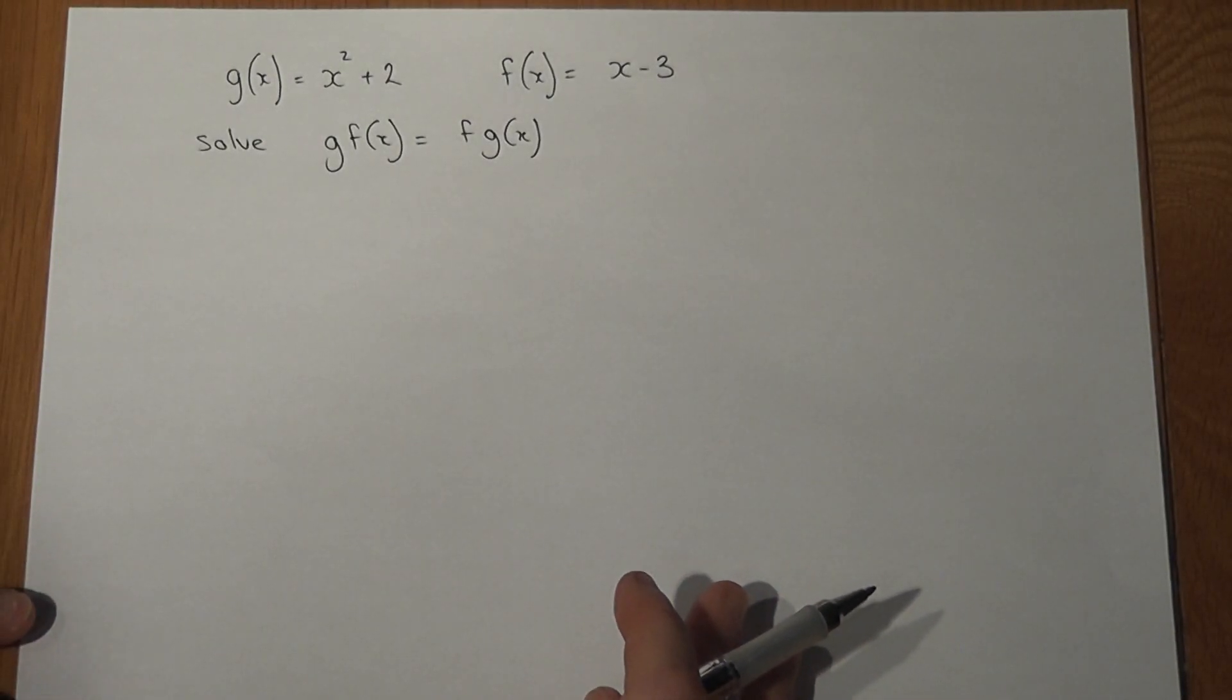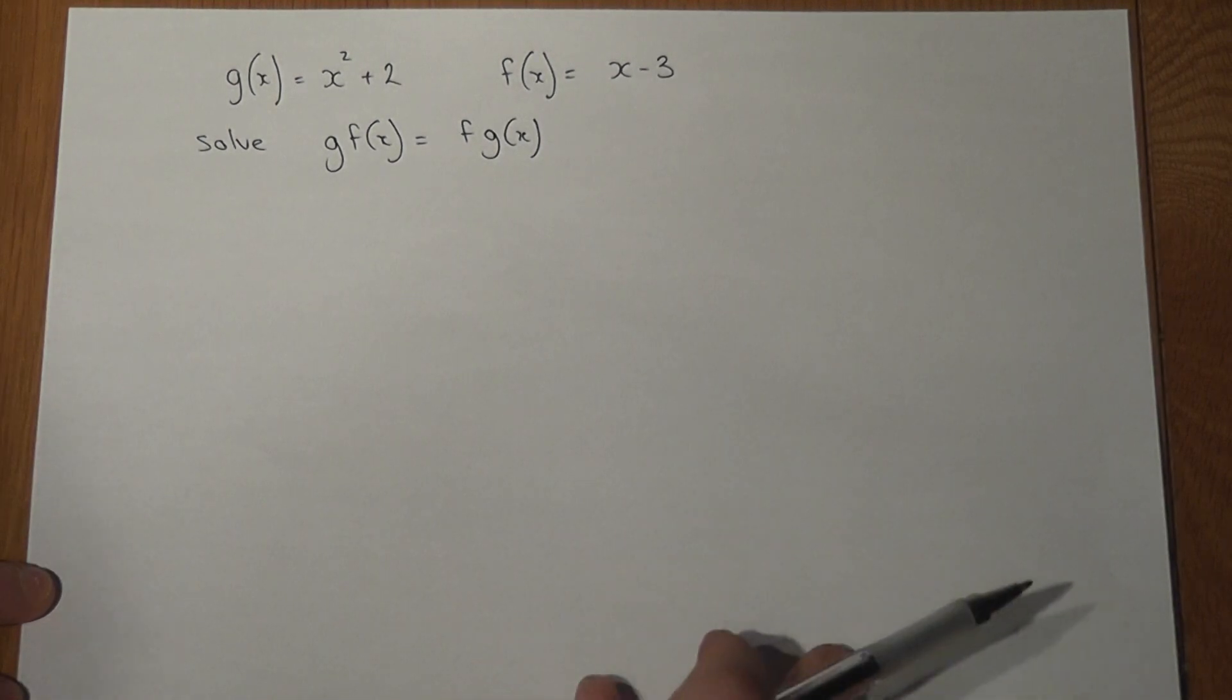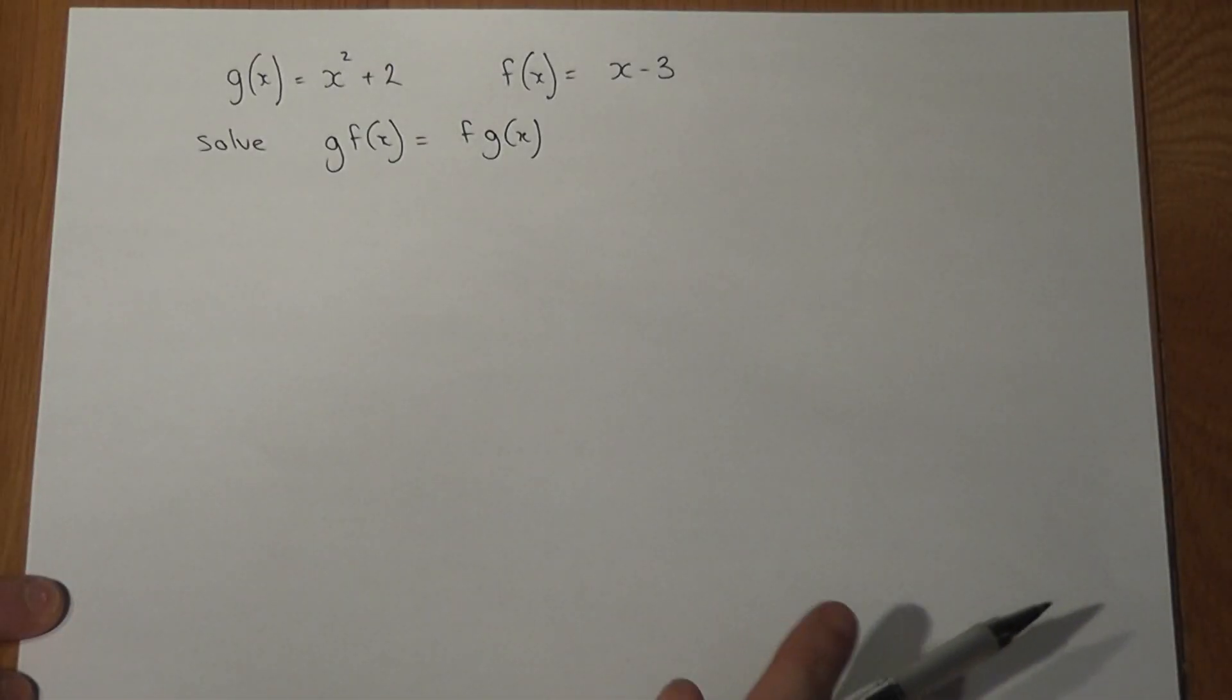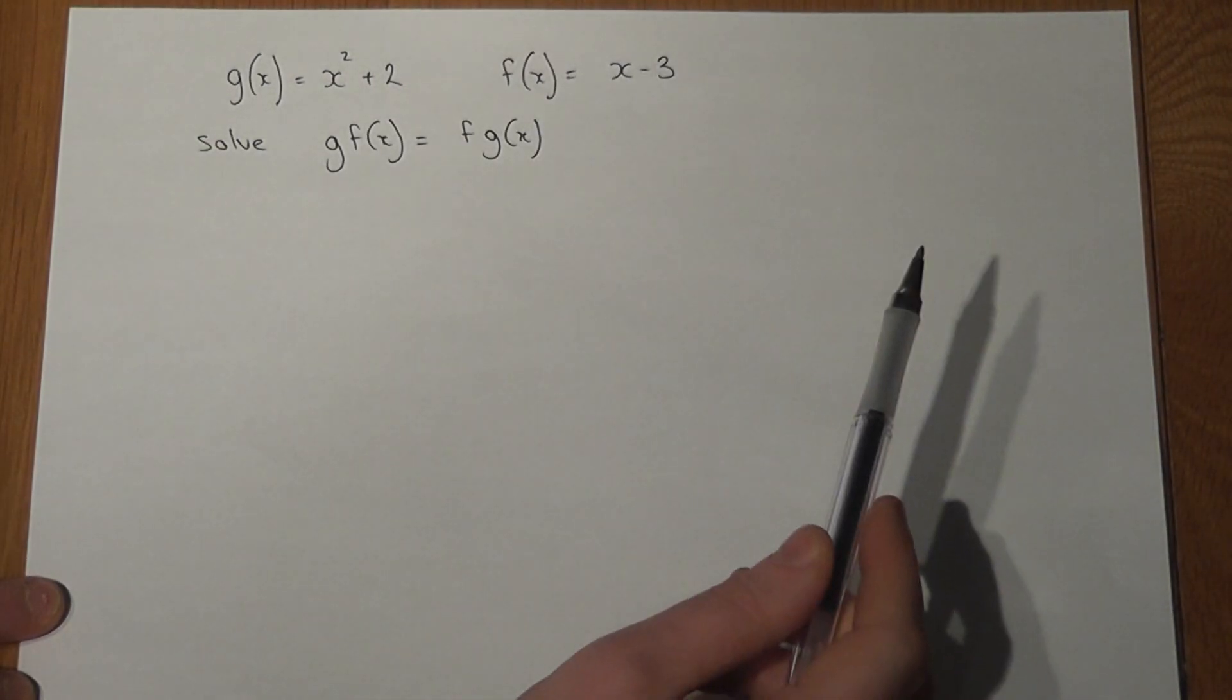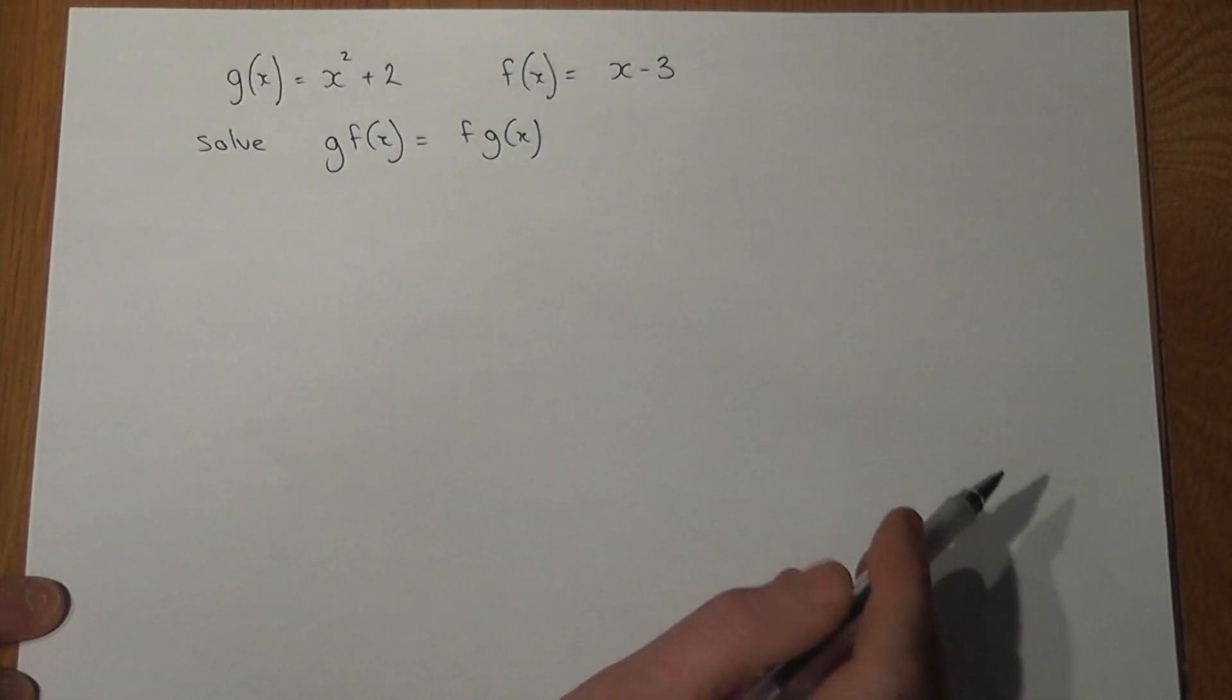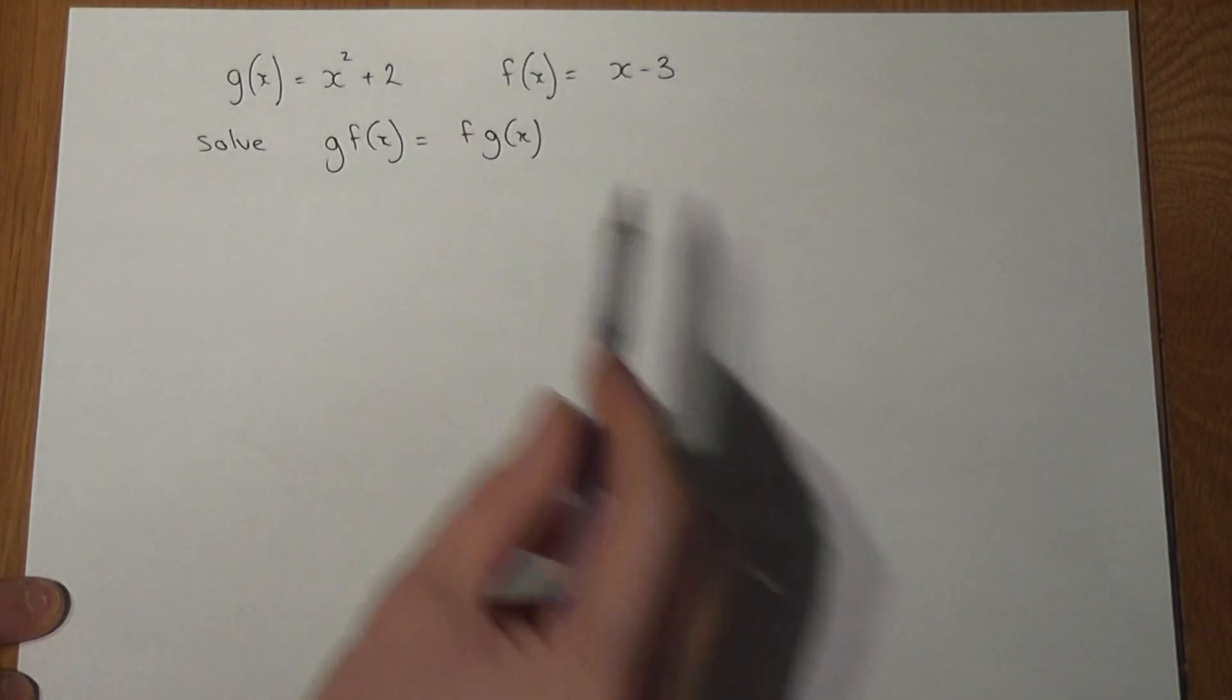This video revises solving an equation involving composite functions. We're given g(x) which is x squared plus 2 and f(x) equals x minus 3, and we're asked to solve g of f of x equals f g of x.